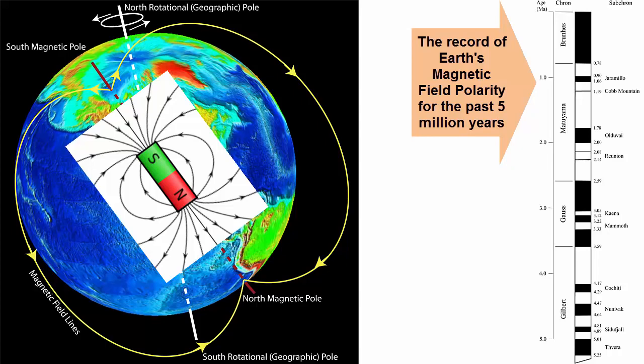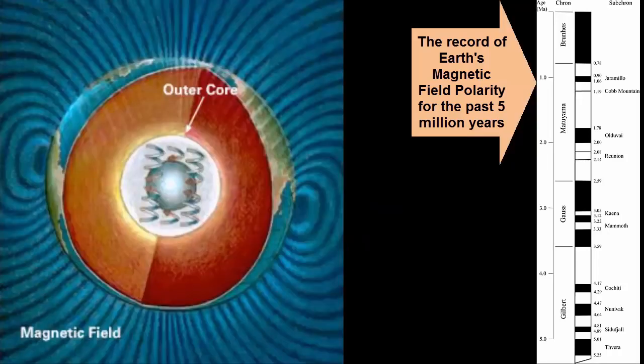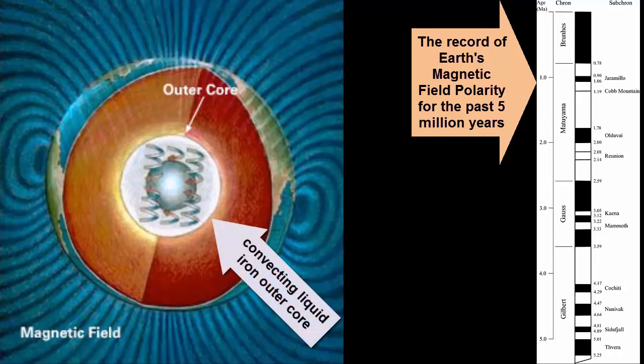We first mentioned it in the lecture on Earth formation. It has existed on Earth since Earth's layers formed, specifically the liquid iron outer core. What do you remember that layer is doing? It's hot and liquid, so it convects.